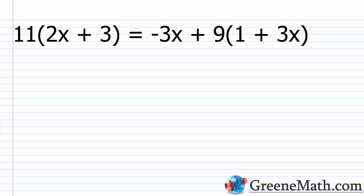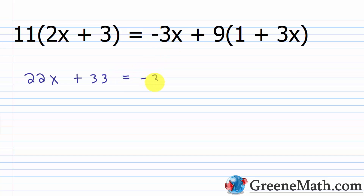Let's look at another example. We have 11 times the quantity 2x plus 3 is equal to negative 3x plus 9 times the quantity 1 plus 3x. Again, we want to simplify each side separately. On the left, 11 times 2x is 22x, plus 11 times 3 is 33. On the right, we have negative 3x, plus 9 times 1 is 9, plus 9 times 3x is 27x. So on the left I just have 22x plus 33.